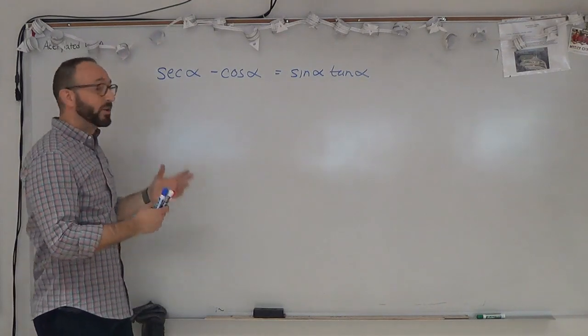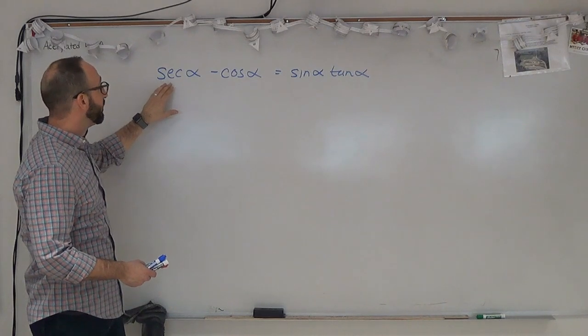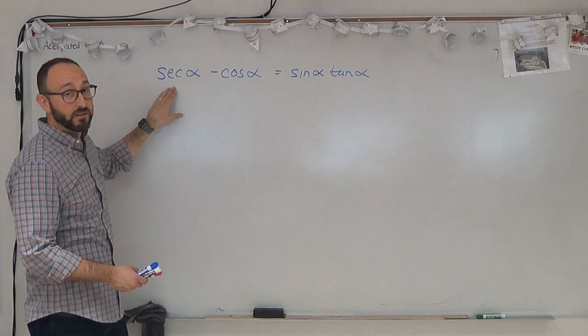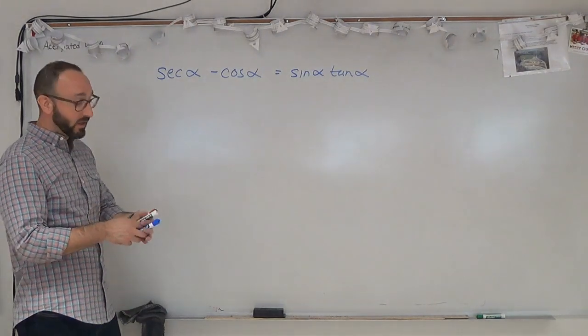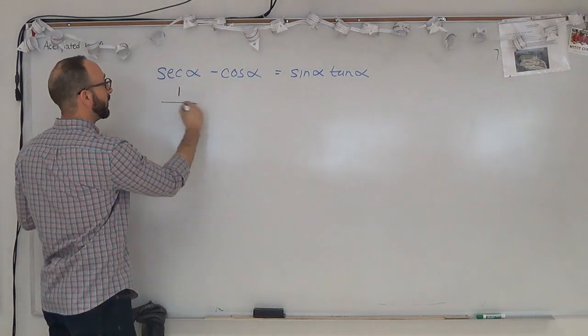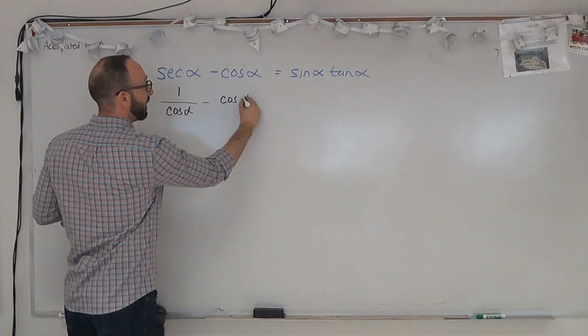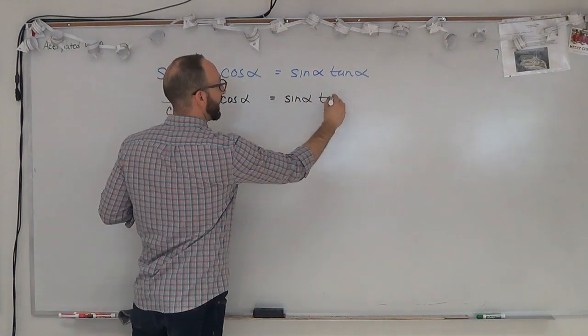So in this case, what I'm going to try to do is immediately convert anything that can be written in terms of sines and cosines into that. So secant alpha can be written in terms of cosines. That's 1 over cosine. So 1 over cosine alpha minus cosine alpha. We're trying to show that that's equal to sine alpha tan alpha.